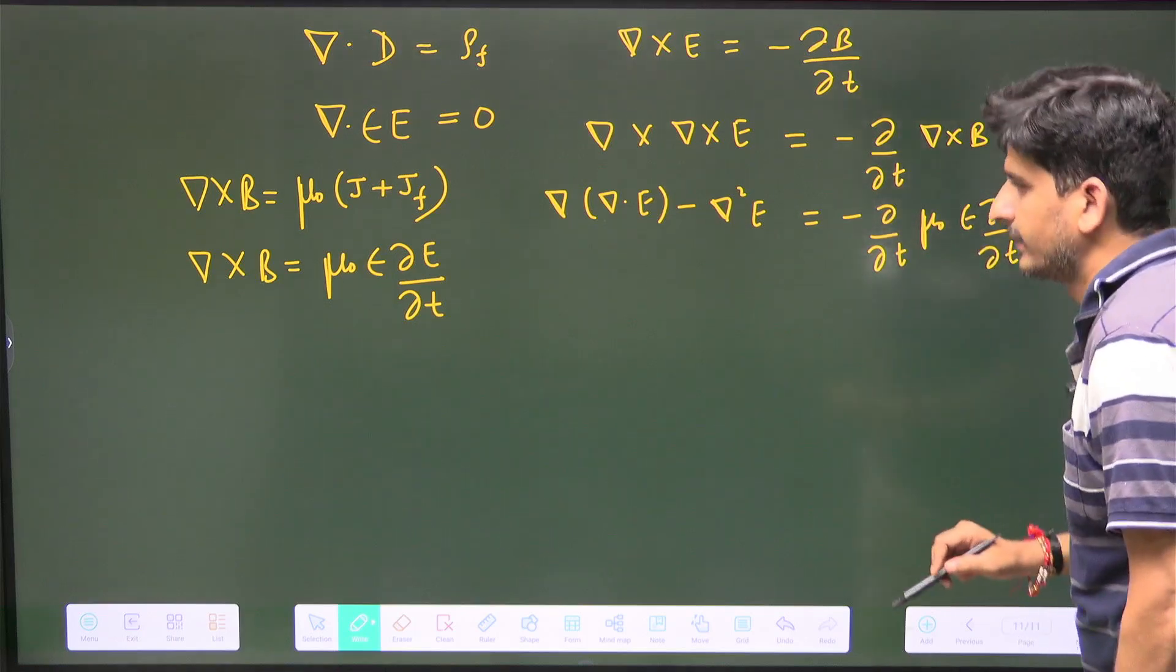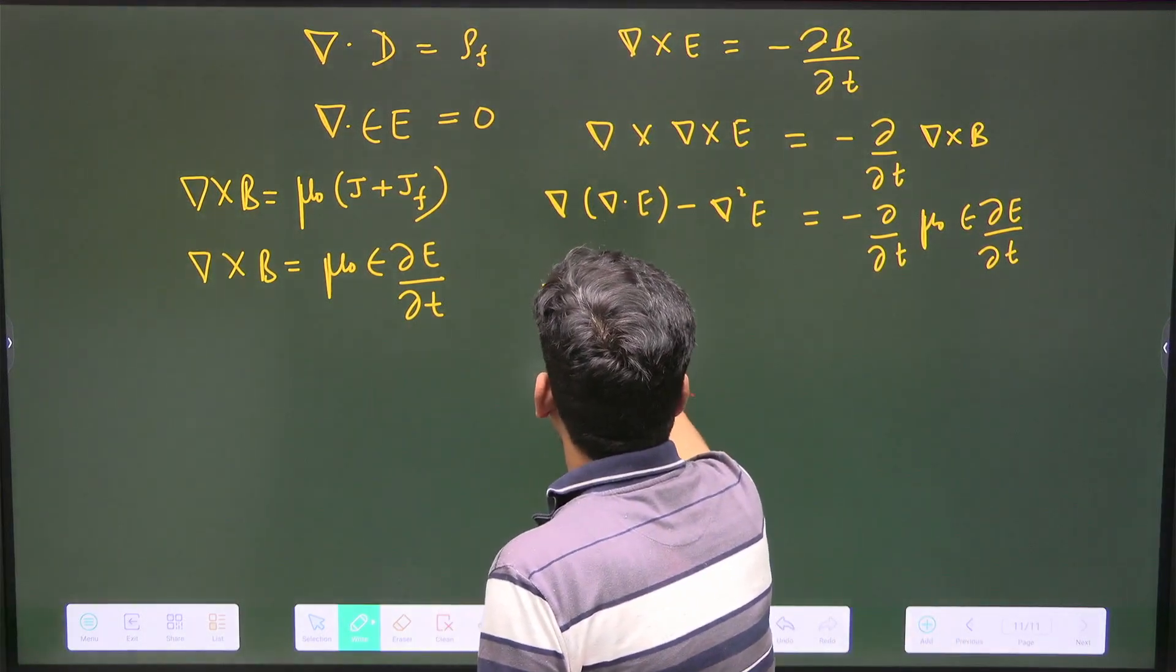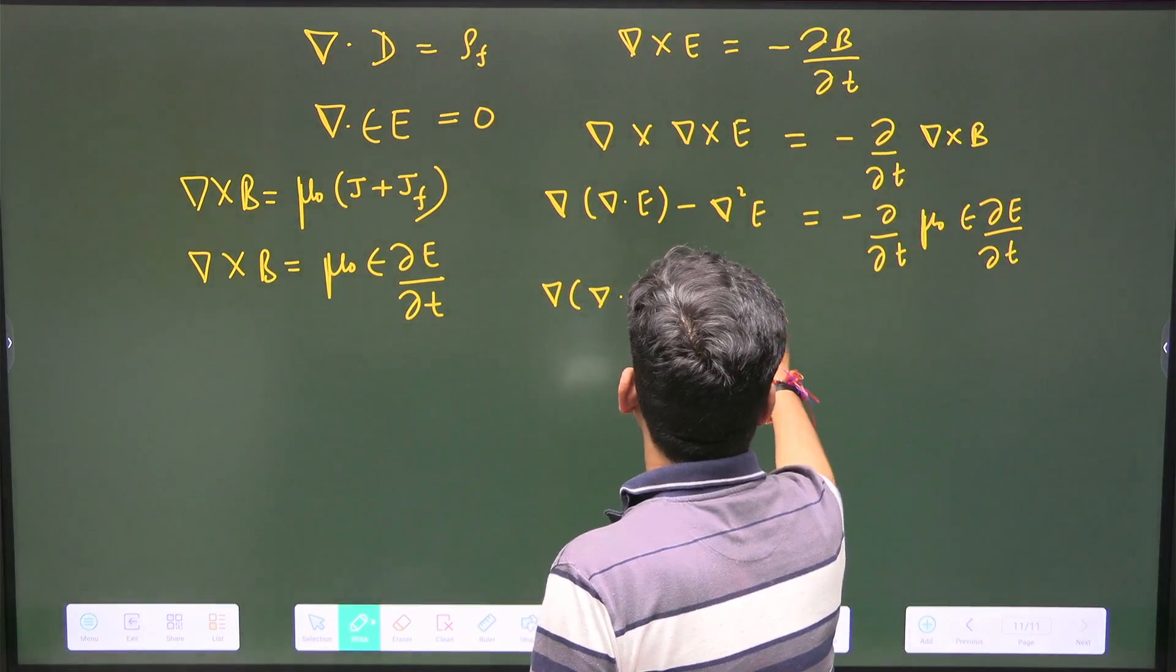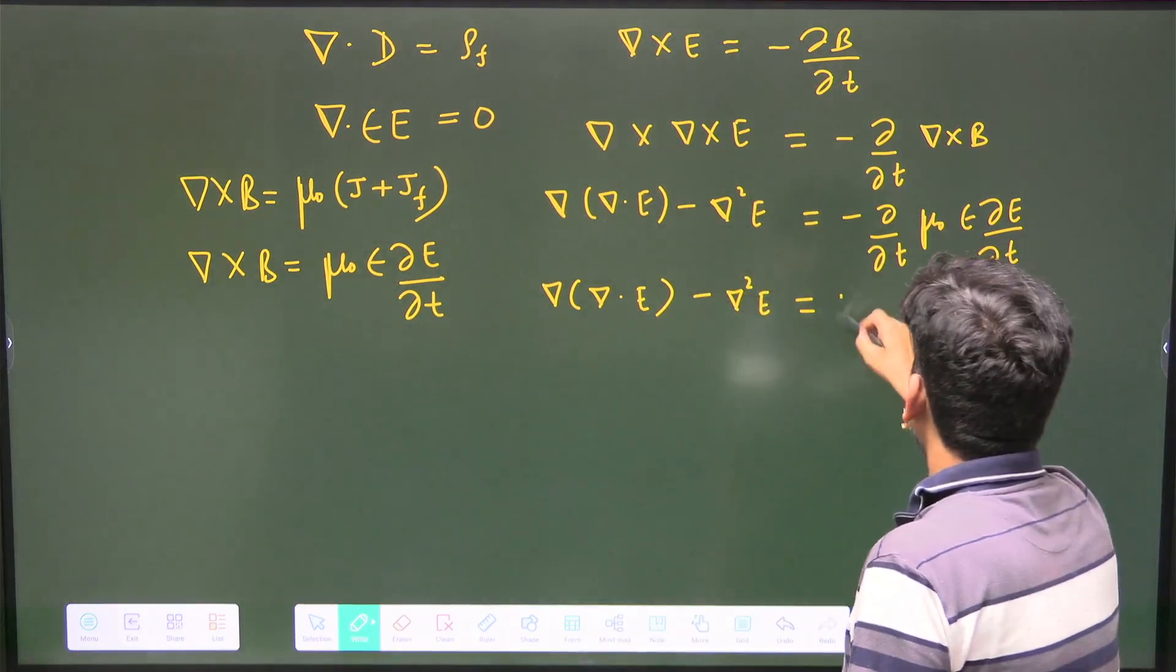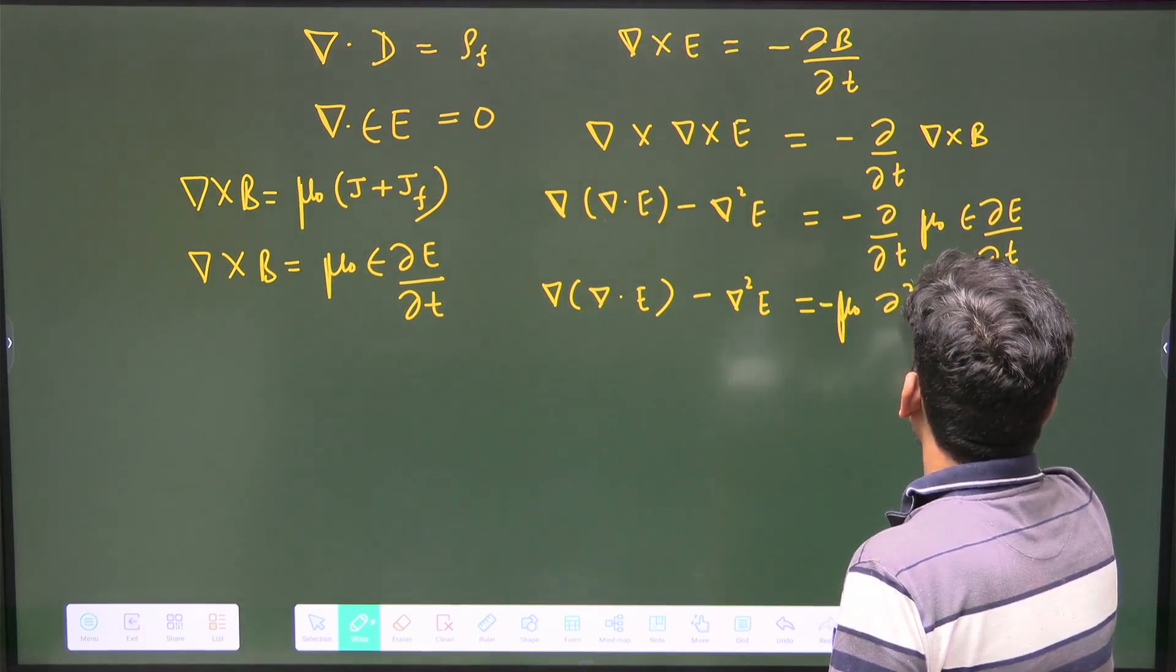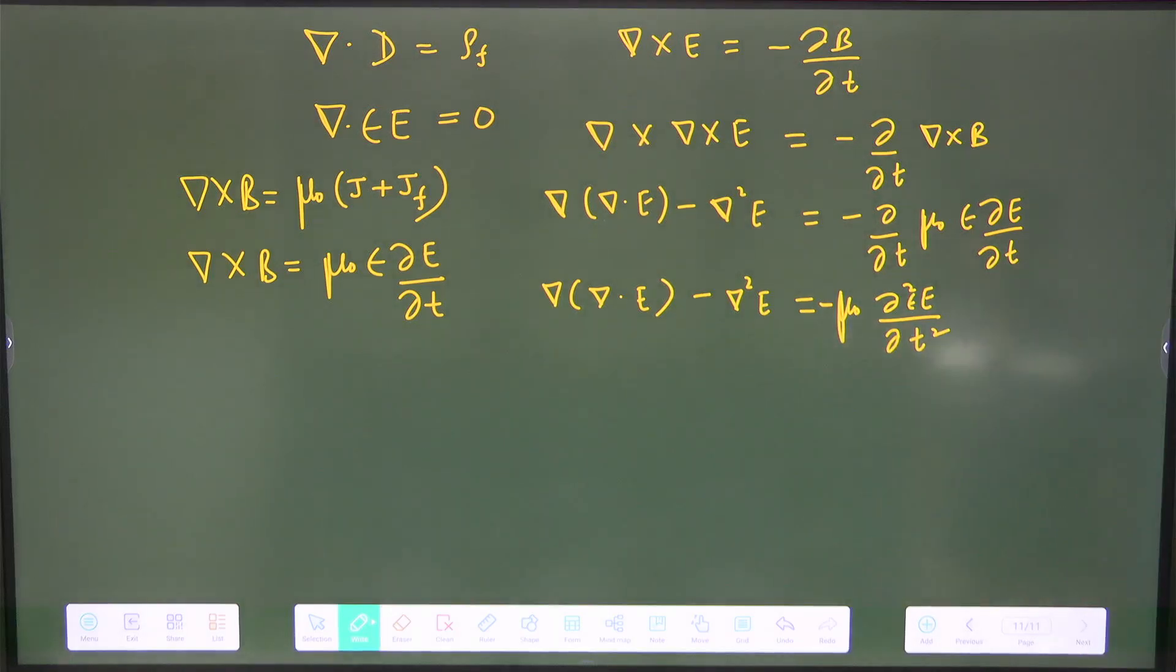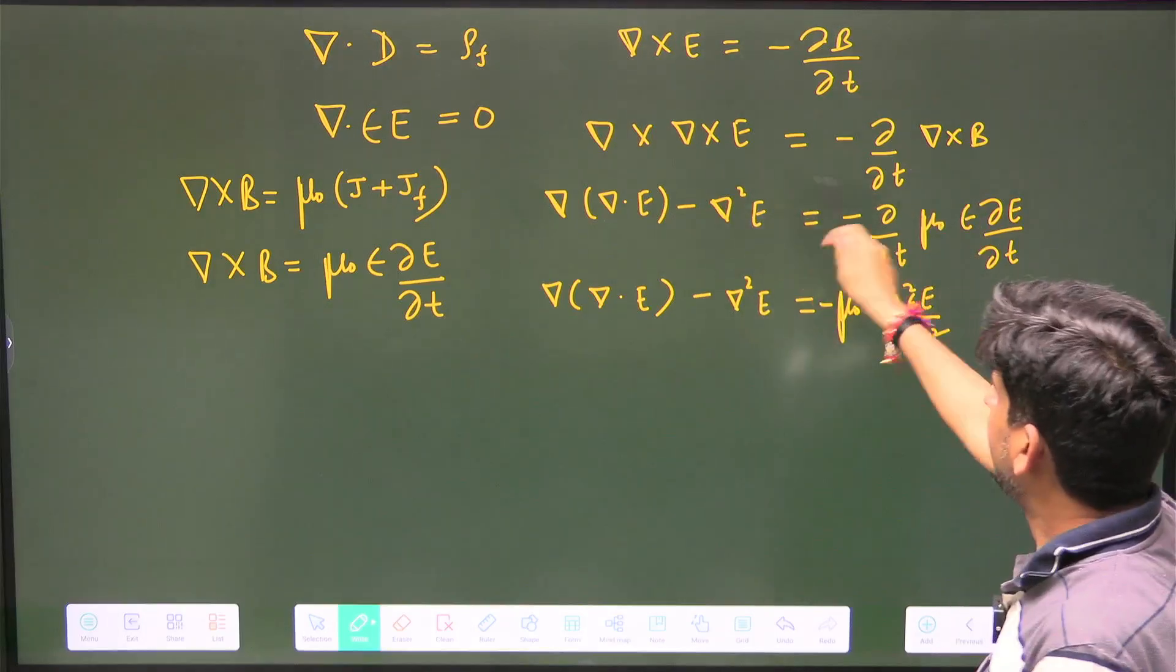So it will become minus del by del t of μ₀ε del E by del t. This will give us del(del·E) minus del square E is equal to minus μ₀ del²(εE) by del t².